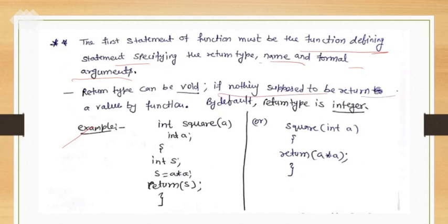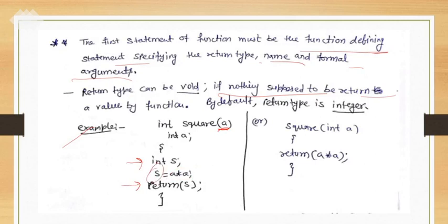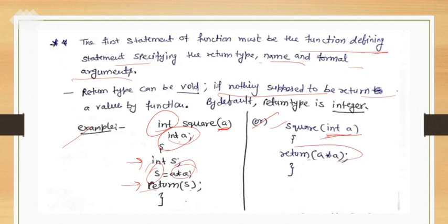For return type, if void you don't need to return anything special. For example, taking int as return type with a function named square and int a as the argument — we declare a local variable int s, set s = a * a, and return the integer value in s. You can return either the expression a*a directly or store the result in local variable s and return s. These are two ways to write the program to calculate the square.